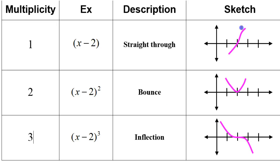If a graph passes right through the x-intercept, then that's a single factor. If the graph bounces at the x-intercept, that's a double factor. If it seems to flatten out and then continue through, that's called an inflection. And that means we have a triple factor.